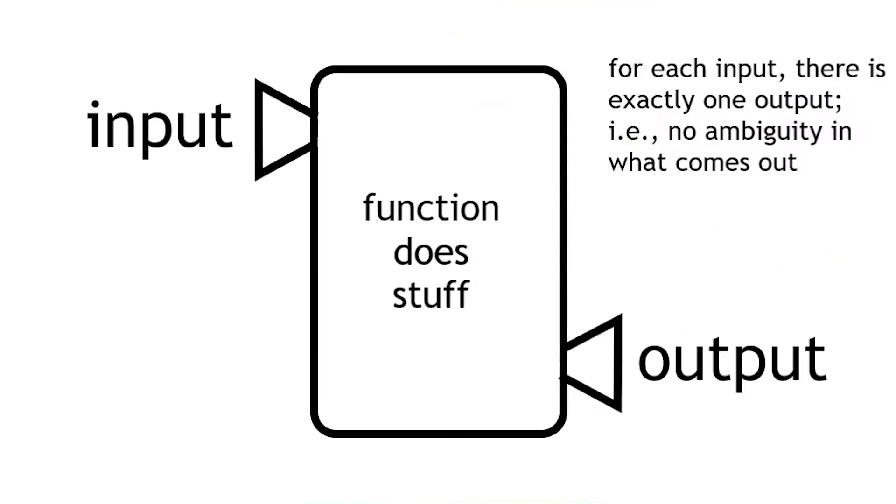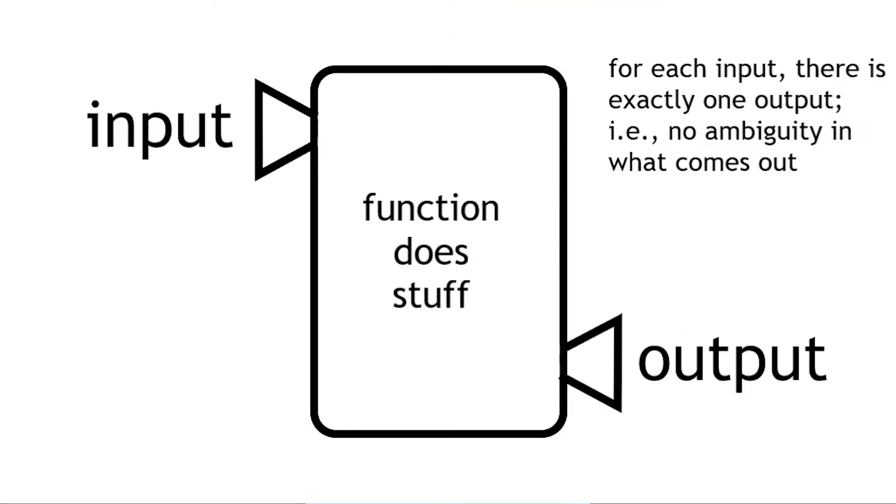They can only pick how long they're going to drive in that car. They can't pick how far they go because that's set as soon as they choose how long they're going to drive and how fast they're going. So that way of making it unambiguous what the output is — that locking down of the output — is what makes it a function. A function is an input-output relationship where when you put an input in, you know exactly the output that's going to come out.